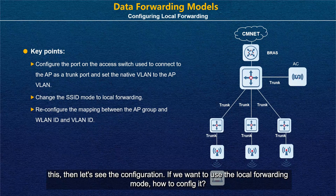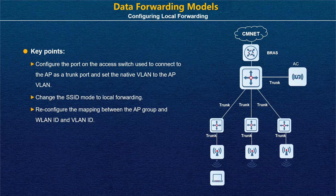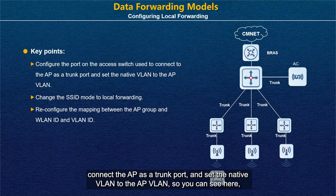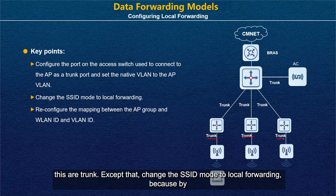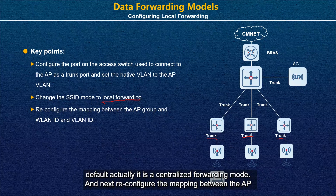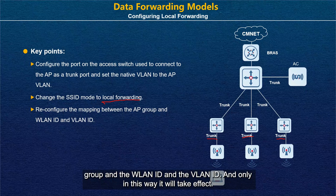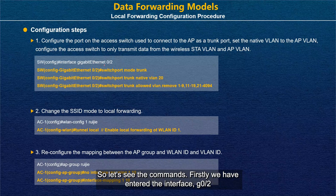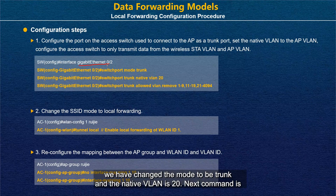To configure local forwarding mode, the key steps are: first, configure the port on the access switch connecting to the AP as a trunk port, and set the native VLAN to the AP VLAN. Second, change the SSID mode to local forwarding, since centralized forwarding is the default. Third, reconfigure the mapping between the AP group, WLAN ID, and VLAN ID. In the commands, we enter interface GigabitEthernet 0/2, set the mode to trunk, and set the native VLAN to 20.